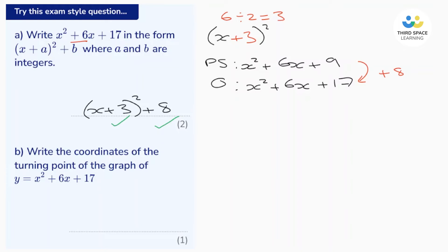Now let's have a look at part b. It says write the coordinates of the turning point of the graph y = x² + 6x + 17. Now that's the same equation that we have just rewritten in the completed square format.